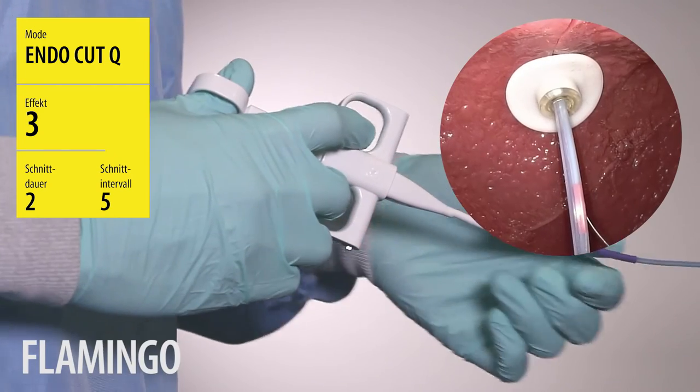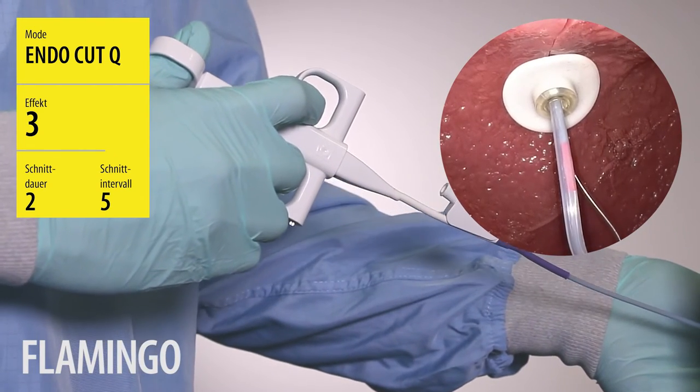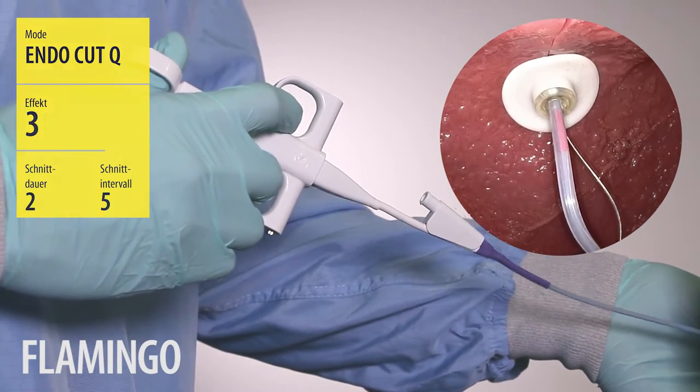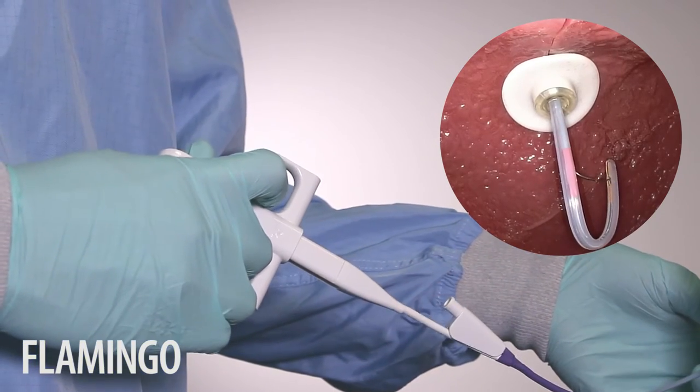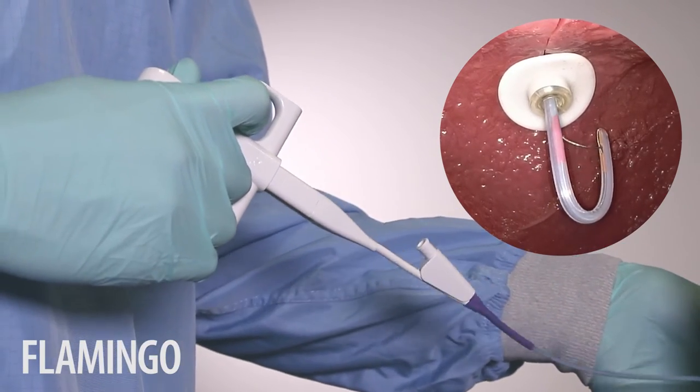Configure the settings shown on your diathermy machine and adjust the angle of the Flamingo until it locks into place at 180 degrees. You should clearly be able to feel it locking into place.